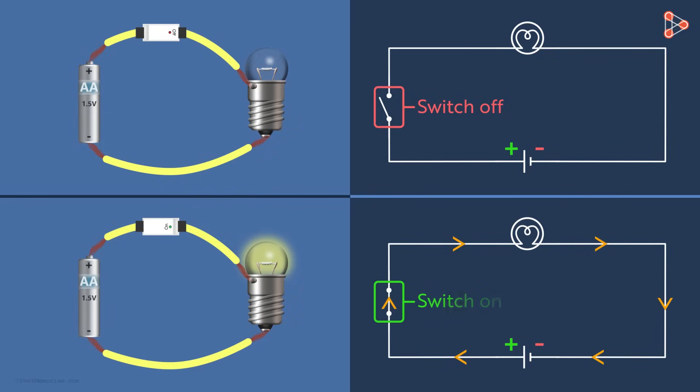This circuit diagram is when the switch is on. Here the circuit is complete and the current is flowing. The arrowheads are used to show the direction of the electric current which is always from the positive to the negative terminal of the battery.